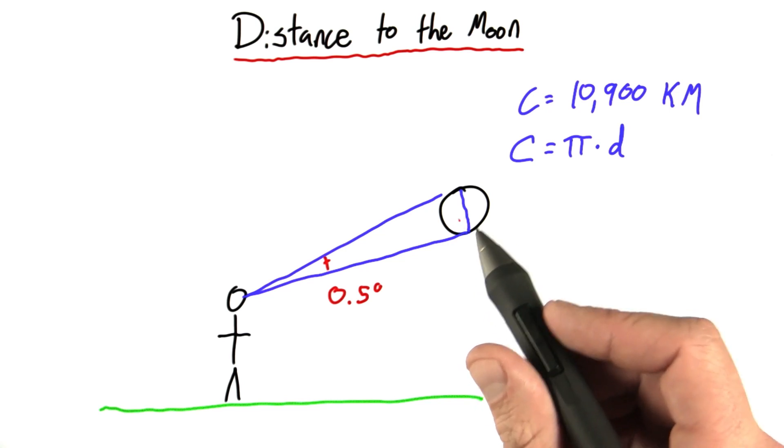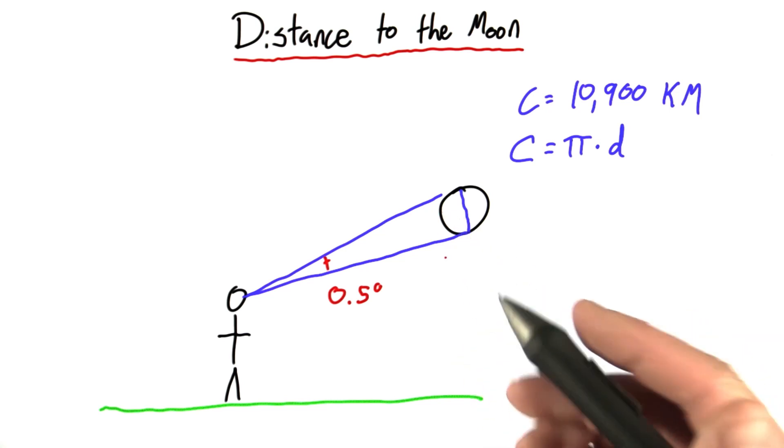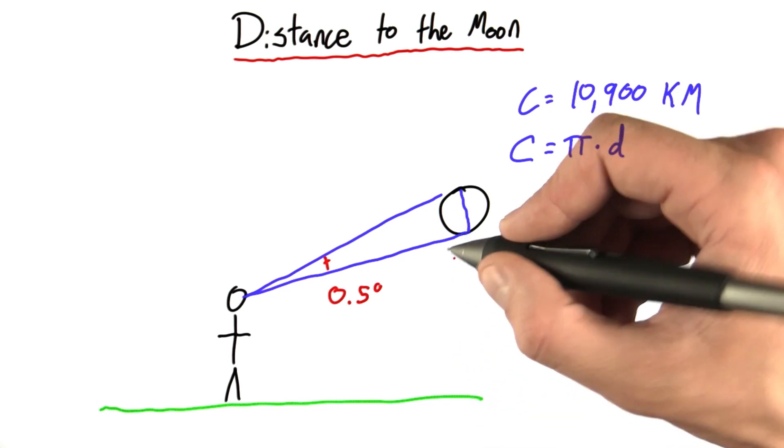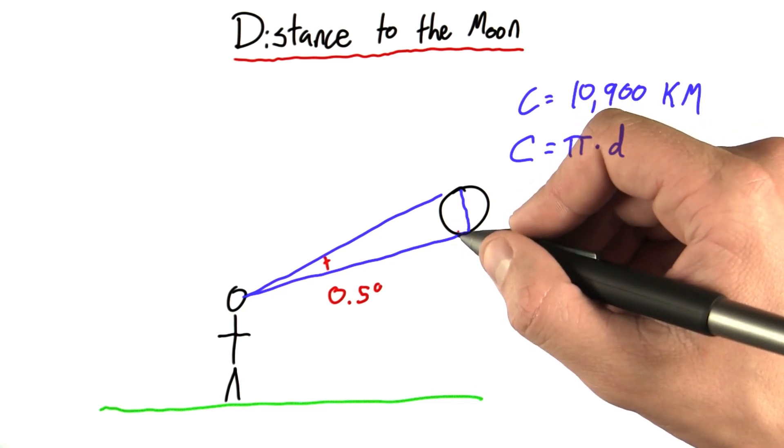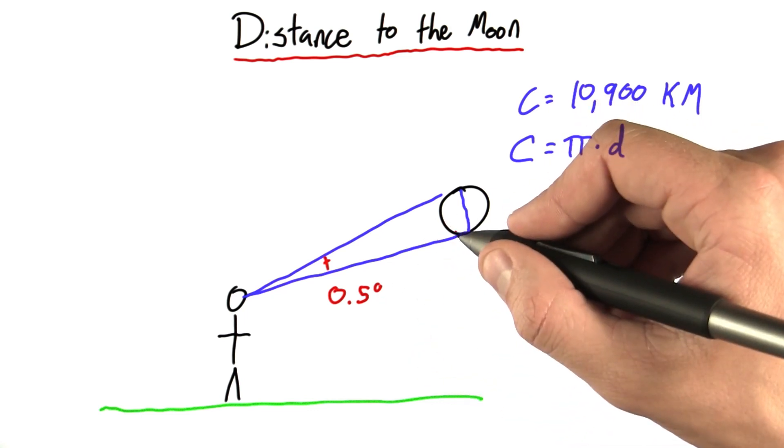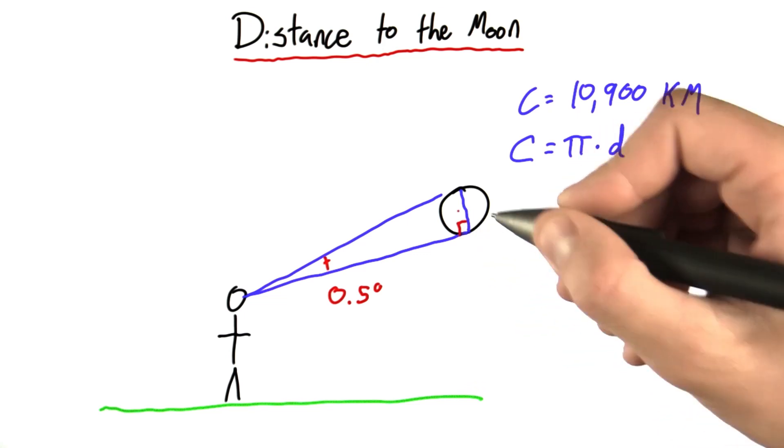Now this isn't exactly a right triangle, but what we can do because we're so tricky is approximate it as one. Half a degree is so small that these angles are both just about 90 degrees.